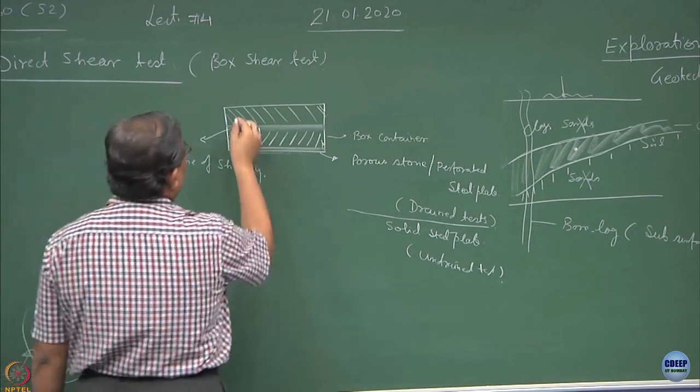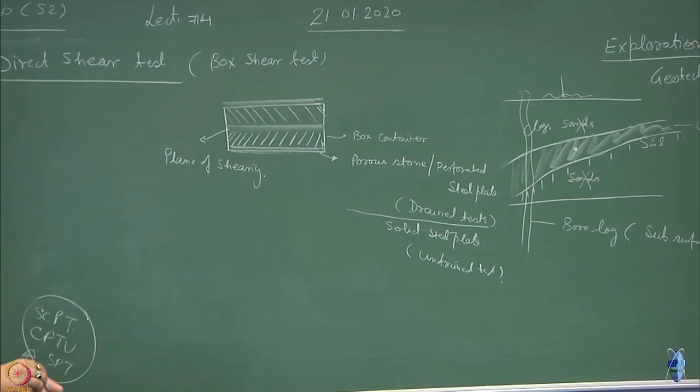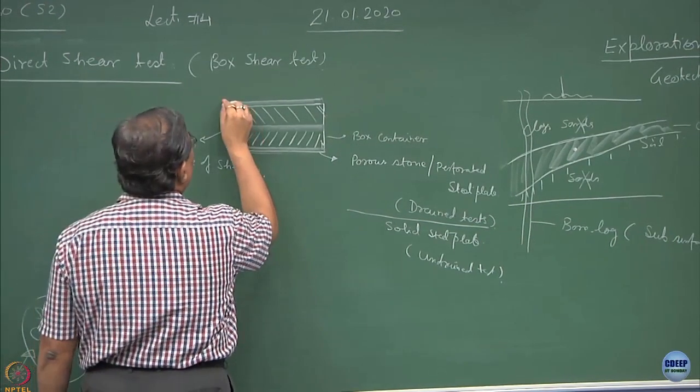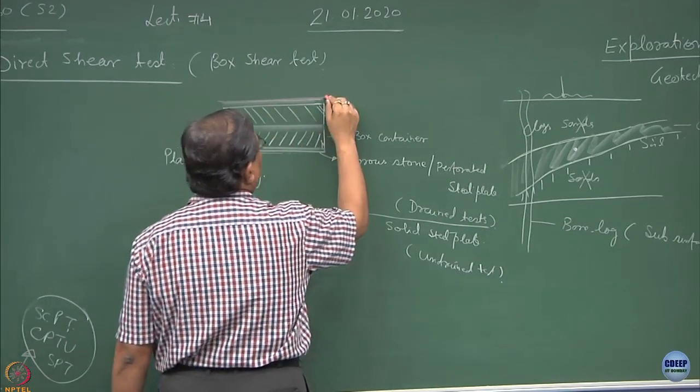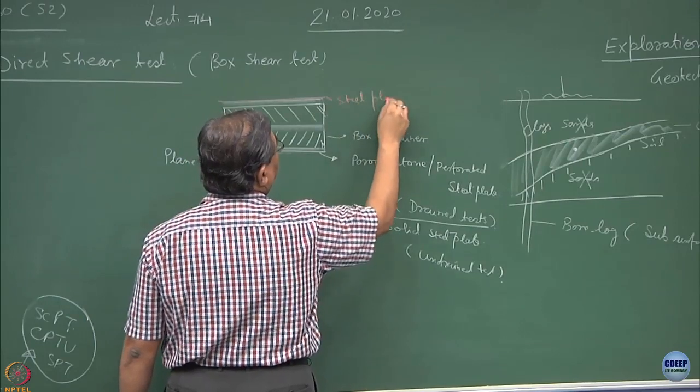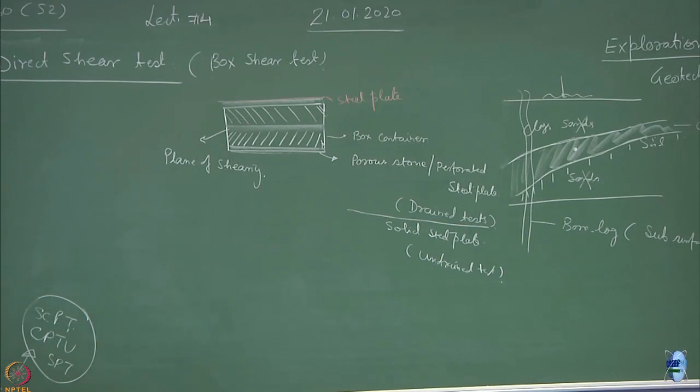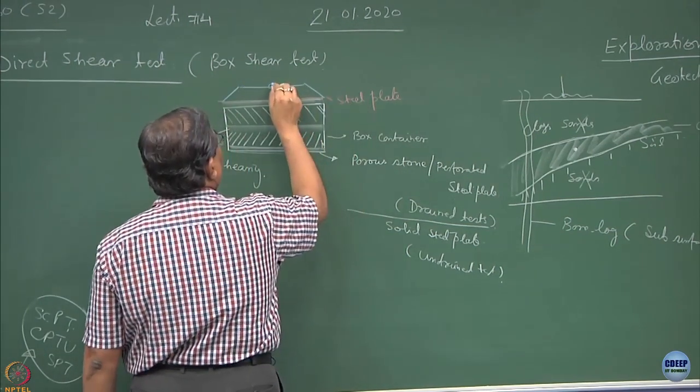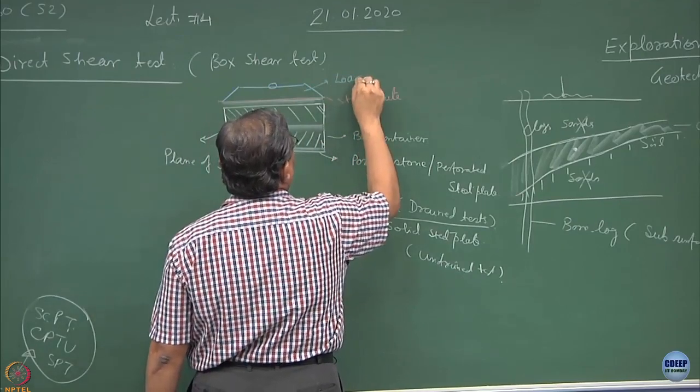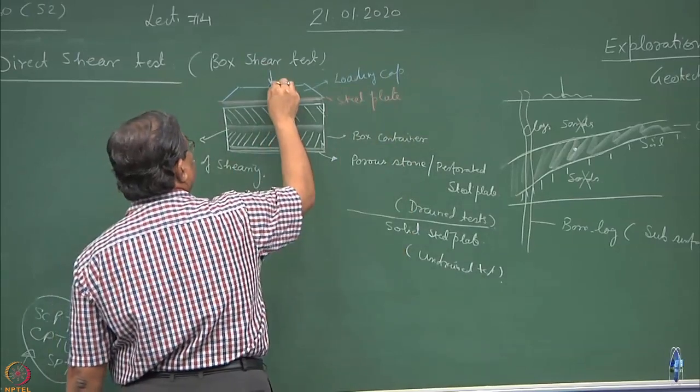On the top of this also, I can put a porous stone or a perforated plate. This is sandwiched between a steel plate. So this is the steel plate to give the rigidity. And then on the top of this is kept the loading cap. And this is how the normal stress sigma is applied.